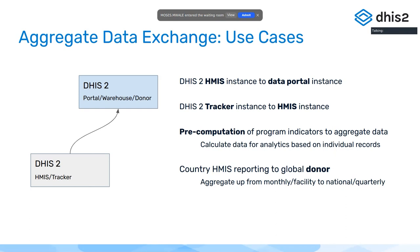Program indicators can be slow to load in real time. If you need to compute data based on individual data and display it on a dashboard with fast load times, it's a good idea to pre-compute those data into an aggregate data element and use that element in the dashboard. Finally, we can now automatically move data from national HMS systems over to global donors. We're working with the Global Fund on a project to streamline country reporting submissions directly through DHIS2, without out-of-band approaches like Excel or manual entry — essentially inferring reporting straight from country HMS systems.